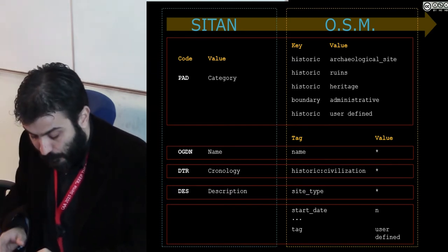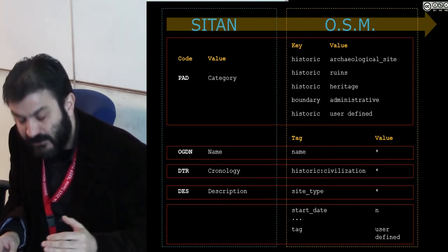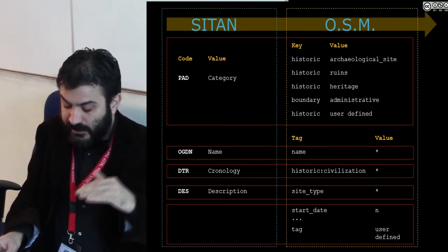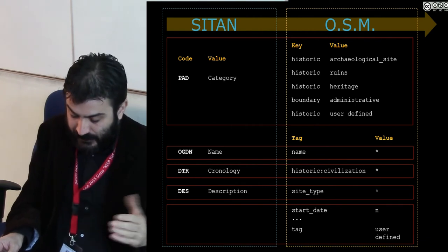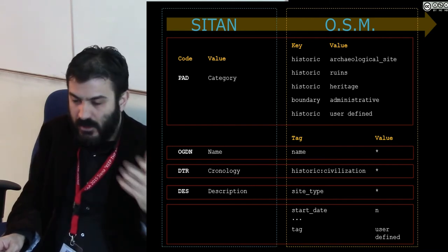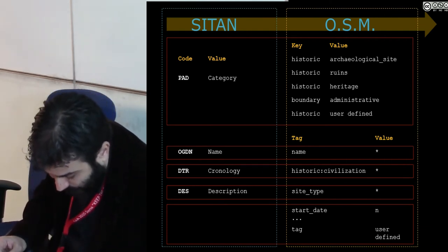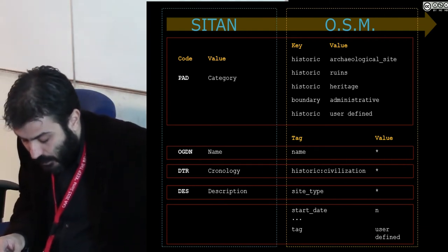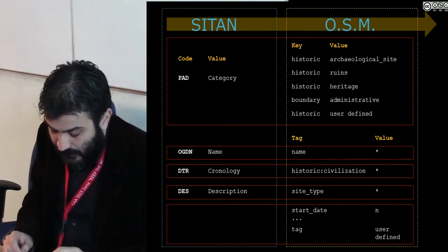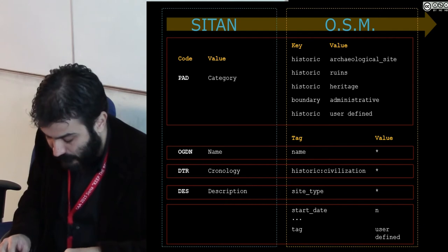This structure proved to be suitable to identify the acquired data according to some categories defined by the open community — for example, historical archaeological sites, historical ruins, and historical heritage — and some tags and sub-tags, for example, the historical period ancient Rome or historical period Nuragic, identifying, in the case of archaeological restrictions or constraints, also a boundary called administrative: an entity that isn't visible or that can be found in the ground but is legally present.